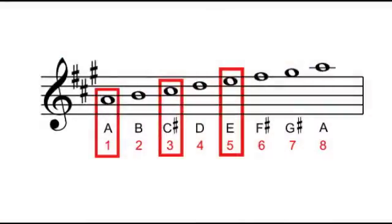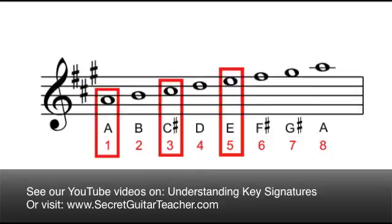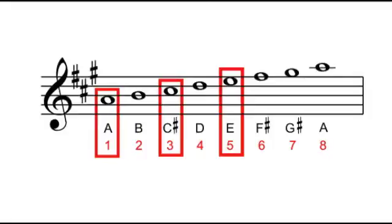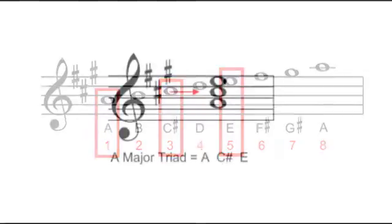So now we know the major triad formula, let's see how we can apply it. We'll take the key of A major. The key of A major has three sharps — Father Charles goes, and we stop at note 7, so G is note 7 in the key of A, giving us three sharps: F, C, and G. Selecting notes according to the major triad formula, we get note 1 — A, note 3 — C sharp, and note 5 — E. So the triad looks like this.